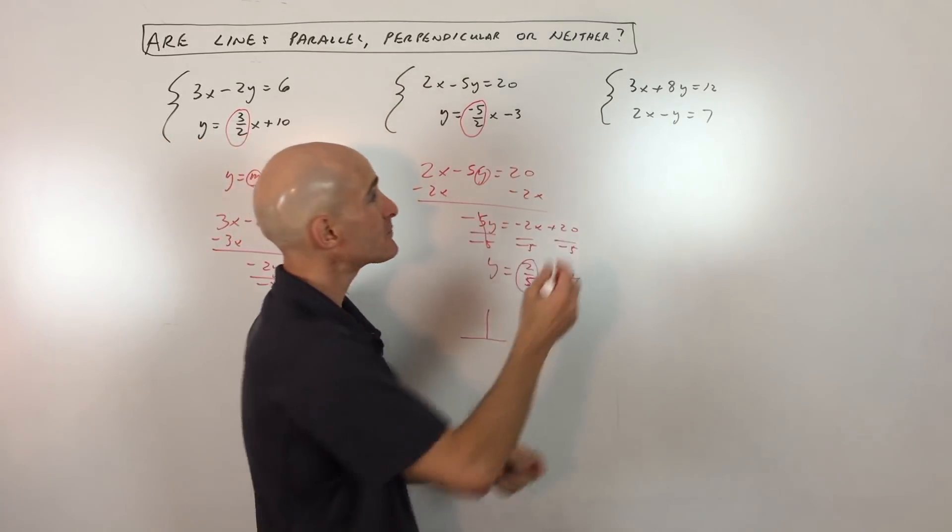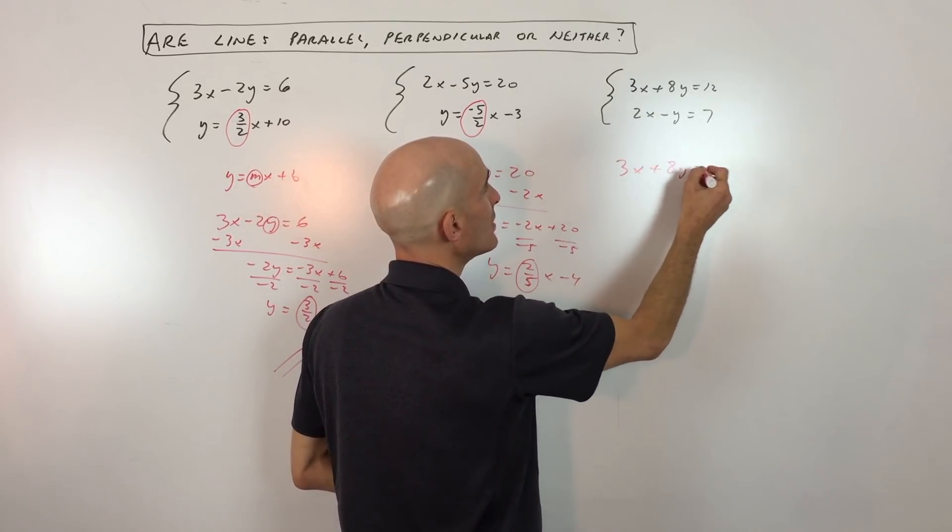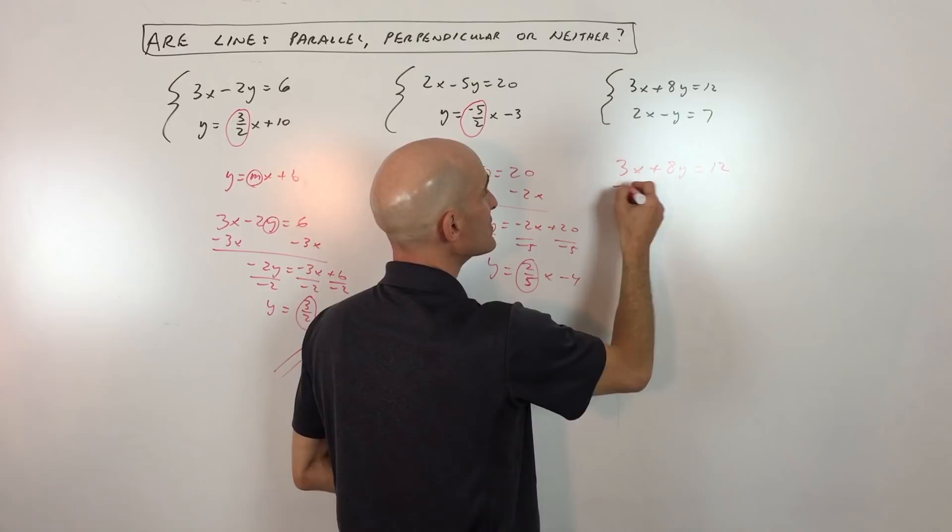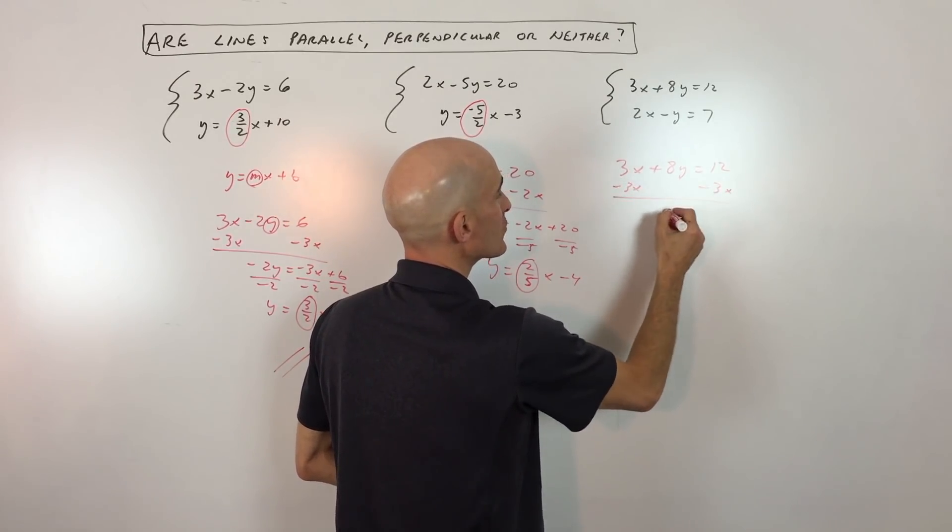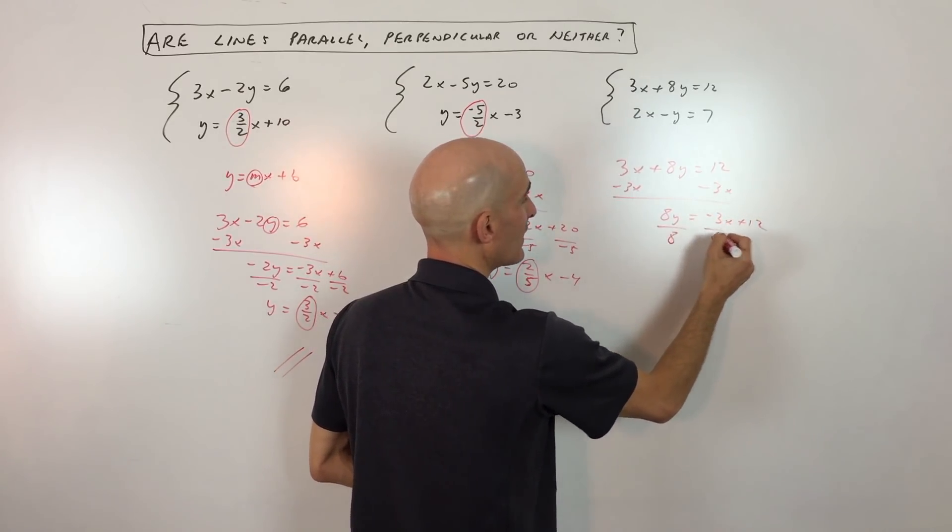Okay, and then the last example, we're going to rearrange both these equations to solve for y so we can examine the slope, put it into the slope-intercept form of the line. And so you can see we're getting negative 3x plus 12. And if we divide both sides by 8, you want to divide everything by 8 to get the y by itself.